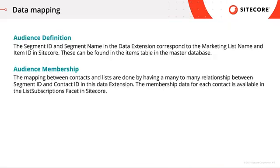For the audience definition, the segment ID and segment name in the data extension correspond to the marketing list name and item ID in Sitecore. These can be found in the items table in the master database. For the audience membership, the mapping between contacts and lists is done by having a many-to-many relationship between segment ID and contact ID in this data extension. The membership data for each contact is available in the list subscriptions facet in Sitecore.